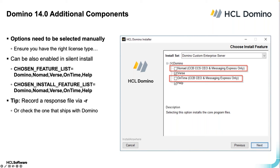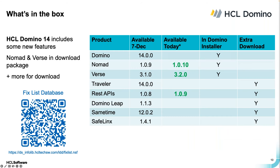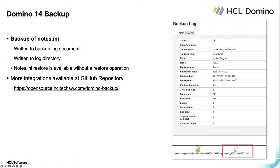The Domino server installer was provided in December, and since then our development teams have been busy and have upgraded some of these components. If you want to be on the latest and greatest version of Nomad and Verse, you need to update the components that come with the installer — another version is available and you may need to download the more recent version after the install. There are a lot of improvements covered by the updates, so for details look at the fixed list database.